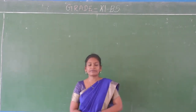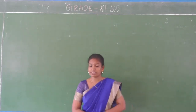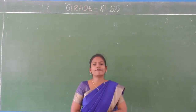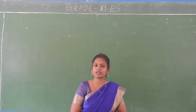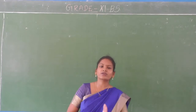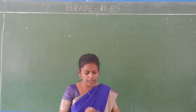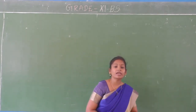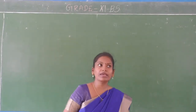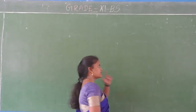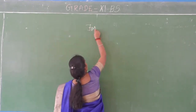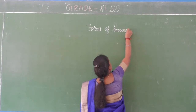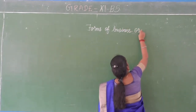Out of that, the first topic we discussed was selection of line of business, then we decided about the size of business, and finally the third point was choosing your form of ownership. Now chapter number 2 is more related to the choice of form of ownership. Chapter 2 is going to deal with the various forms of business organization, so I am very happy to start with chapter 2, which is going to be forms of business organization.